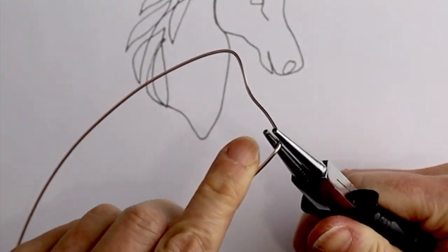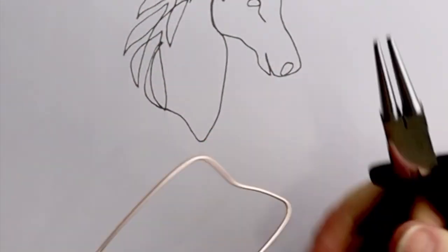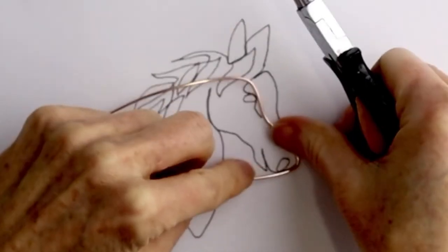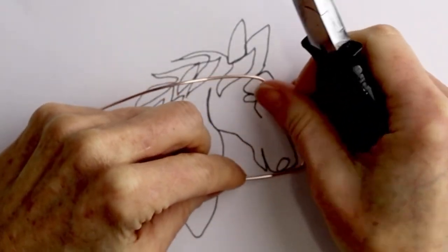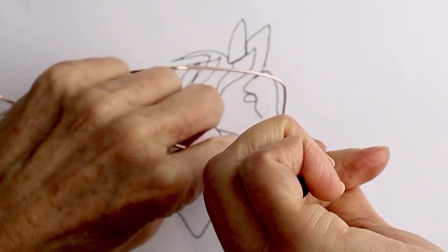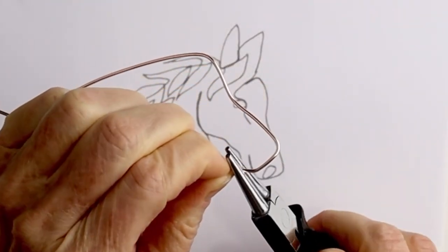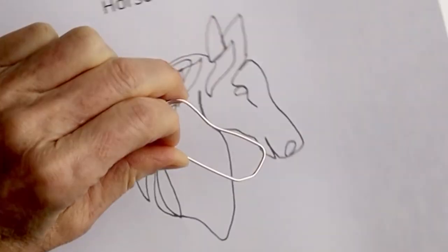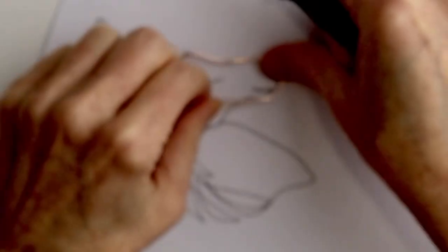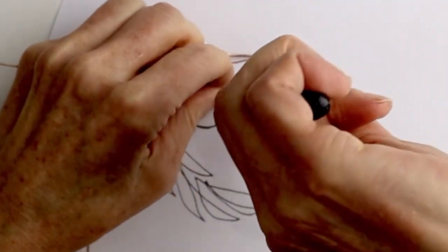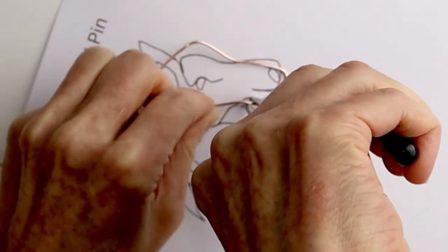We are just going to go around the outside of the template, going back and forth from using our tools to tracing it right on the paper. I have some round pliers that I'm doing some of the bends with, and then you're going to rotate the template as you need so it's easier to access.